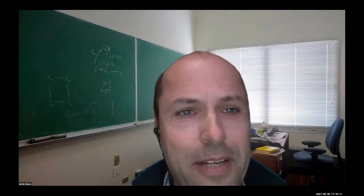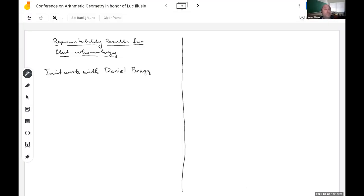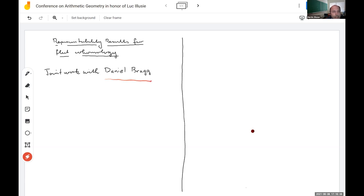Let me also apologize in advance. I'm still struggling with the slides, so I'm going to do my best to give the closest thing to a blackboard talk that I can and handwrite. Please let me know if my handwriting is hard to read. So I'm talking about representability results for flat cohomology. This is joint work with Dan Bragg, who is here at Berkeley.